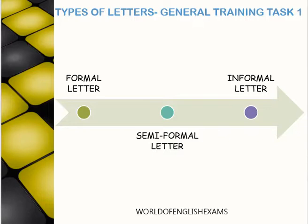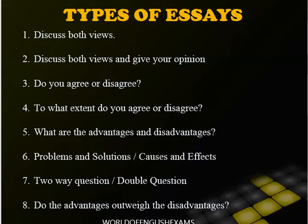Now let's understand the various kinds of essays — the essay questions are the same for both academic and general training. There are 8 different types of essays, one of which will be asked in your exam. The first type is 'discuss both views,' where views of two different sections of the community are given and you need to discuss both — your opinion is not required here. The second type is 'discuss both views and give your opinion,' where you discuss both views and also justify which side you are supporting.